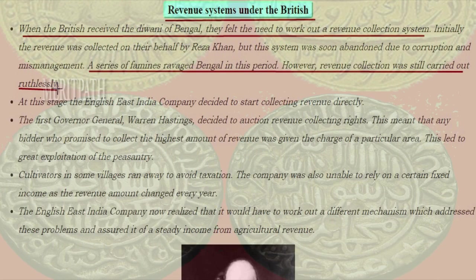Revenue systems under the British: when the British received the Diwani of Bengal, they needed to work out a revenue collection system. Initially, revenue was collected on behalf of Reza Khan. But this system was soon abandoned due to corruption and mismanagement, and a series of famines ravaged Bengal during this period.